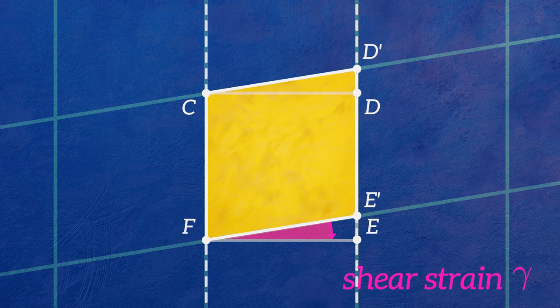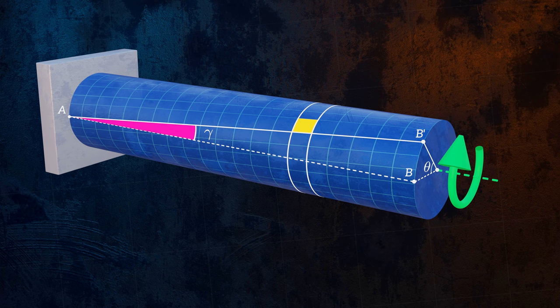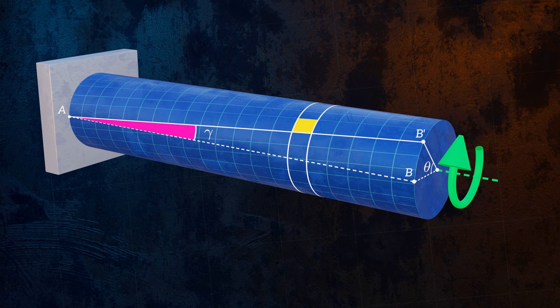We can calculate the shear strain by considering only the geometry of the bar in the deformation. It corresponds to this angle between AB and AB prime. We can use trigonometry to derive an equation for shear strain. For small angles,